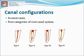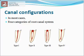Canal configuration: in most cases the number of root canals corresponds with the number of roots, but a root may have more than one canal. There are four types: Type 1 - single canal from pulp chamber to apex; Type 2 - two separate canals leaving the chamber but exiting as one canal; Type 3 - two separate canals leaving the chamber and exiting as two separate foramina; Type 4 - one canal leaving the chamber but dividing into two separate canals and exiting in two separate foramina.